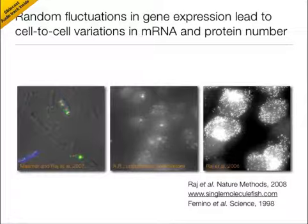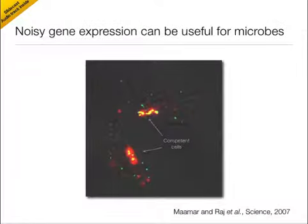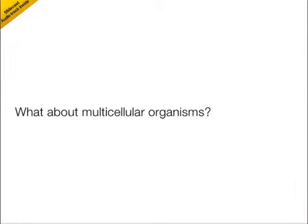Our method is partially based upon one developed by Rob Singer at Albert Einstein — see Femino et al., Science 1998 for details. In the past, we used this method to show that variability in gene expression leads to random cell fate selection in the bacterium B. subtilis. Generally, variability is thought to be useful for bacteria in that it allows genetically identical populations to commit subpopulations to different cell fates, thereby hedging their bets against future environmental changes.